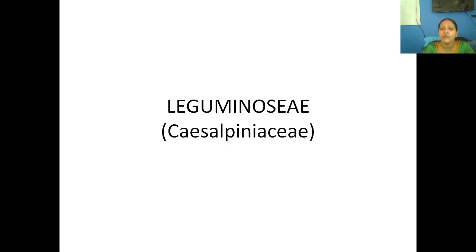Now we move to Leguminosae subfamily Caesalpinioideae. Caesalpinioideae is a subfamily; Cassia is an example — Cassia fistula, known as Kondapoo in Malayalam. This is the habit and this is the flower. Cassia tora is another plant in this subfamily; a superior ovary can be seen in this.